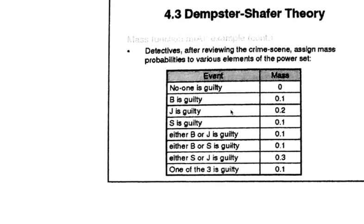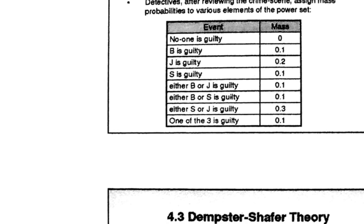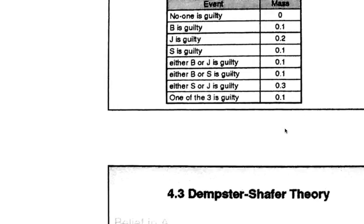A detective came and assigned masses — probabilities to various elements of the power set based on the evidences. No one is guilty: mass is 0. B is guilty: mass is 0.1. J is guilty: mass is 0.2. And all of these masses should sum to 1, which is one of the conditions we studied earlier. Checking: 0, 0.1, 0.2... yes, they sum to 1.